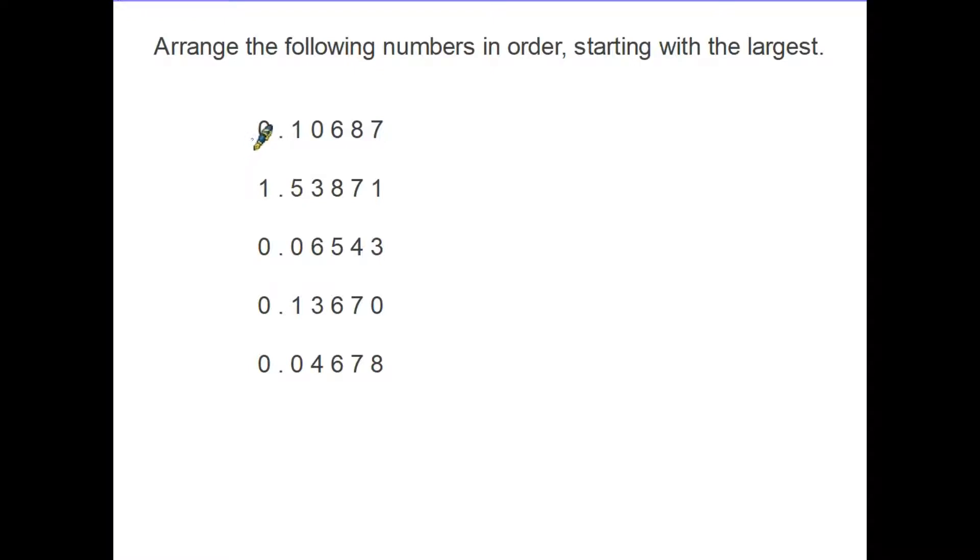So what do we do? Well, we compare the numbers by starting in this column here. These are the whole numbers and are by far the largest of all the columns. We have a look at the digits in this column: zero, one, zero, zero, zero. Therefore this number here stands out as having the largest number, the one. All the others are zero, so that must be the largest number.